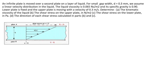In this lecture we will do a problem on viscosity. The problem is: an infinite plate is moved over a second plate on a layer of fluid. For a small gap width d equal to 0.3 millimeter, we assume a linear velocity distribution in the liquid. The liquid viscosity is 0.065 Newton second per meter square and its specific gravity is 0.9. The lower plate is fixed and the upper plate is moving with a velocity of 0.3 meter per second. Determine: first, the kinematic viscosity of the liquid; the shear stress on the upper plate in Newton per meter square; the shear stress on the lower plate in Pascal; and the direction of each shear stress calculated in parts B and C.